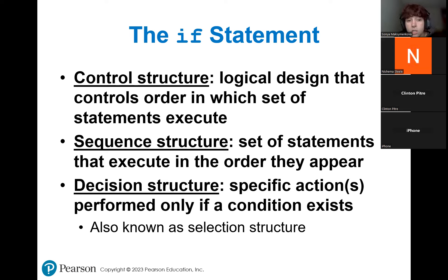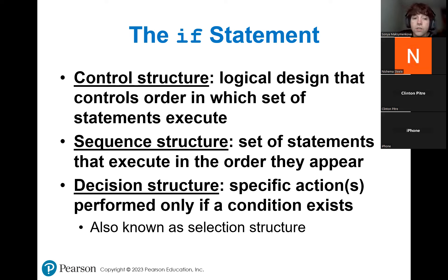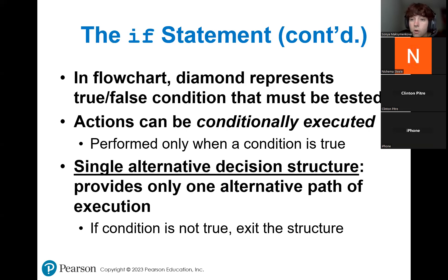The sequence structure is a set of statements — basically your actual code that you write. And then the decision structure is our if-else structure, which I'll show you later. A quick recap from flowcharts: the diamond shape represents a true-false condition, so it will have two different ways your program can go.